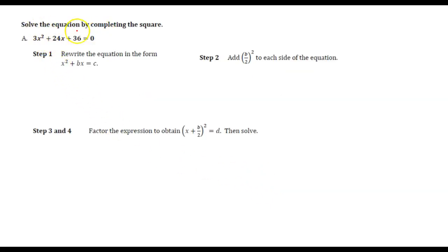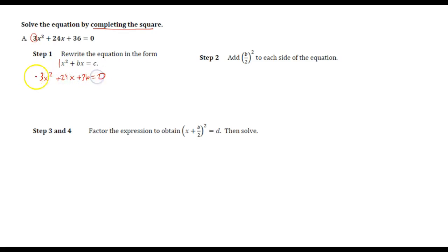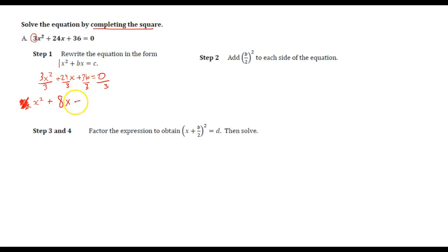Now we're solving — not just completing the square, but using it to solve. They want us to rewrite the equation in the form x squared plus bx equals c. I have a leading coefficient of 3 instead of 1, so I need to get rid of that. With 3x squared plus 24x plus 36, I can divide every term by 3: that gives x squared plus 8x plus 12 equals 0.